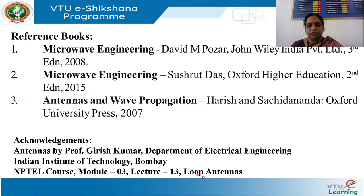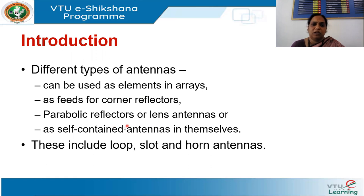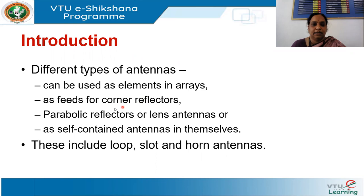Some data has been taken from the NPTEL lecture on loop antennas. In the introduction, we have different types of antennas. Antennas can be used as elements in an array, as feeds for corner reflectors, as parabolic reflectors, as lens antennas, or as self-contained antennas. The types of antennas include slot, loop, and horn antennas. We'll first discuss the loop antenna.